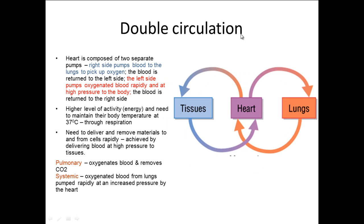Now here's our double circulatory system. As mentioned before, you've got two circulations. You've got the pulmonary circulation which goes from the heart, taking deoxygenated blood towards the lungs where it can absorb oxygen, and it's then pumped back towards the heart. The systemic circulation takes oxygenated blood from the heart, pumps it towards the body tissues where the nutrients and oxygen are used. Waste is then put back into the blood and transported back towards the heart.